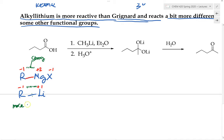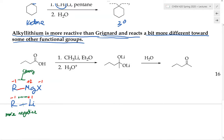The alkyl lithium is more reactive because it tends to be more negative. That's why alkyl lithium reagents are more reactive than the Grignard reagent both as a nucleophile and as a base. Now let's go over the chemical reactivity of the alkyl lithium reagent with carboxylic acid. The carboxylic acid has an acidic proton. When treated with the alkyl lithium reagent, which can behave as both a base and a nucleophile, anytime an acid-base reaction can happen, it will happen before nucleophilic addition.